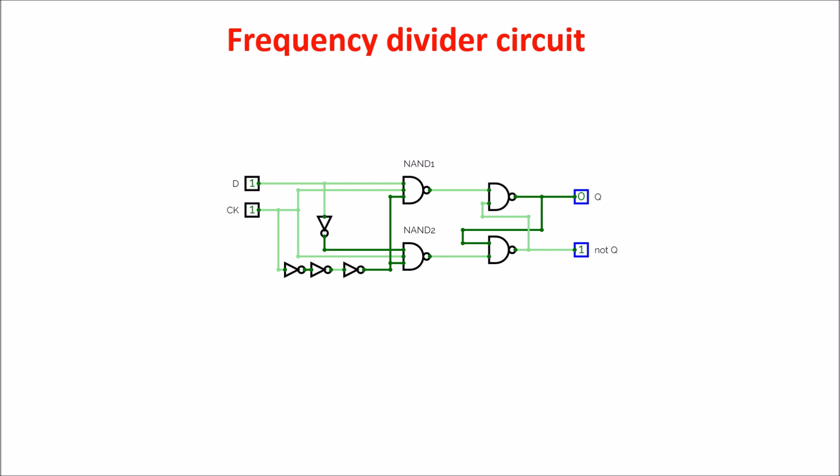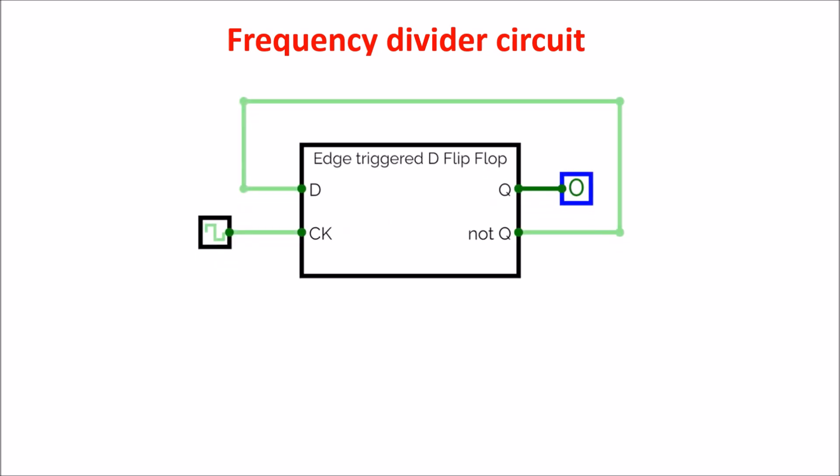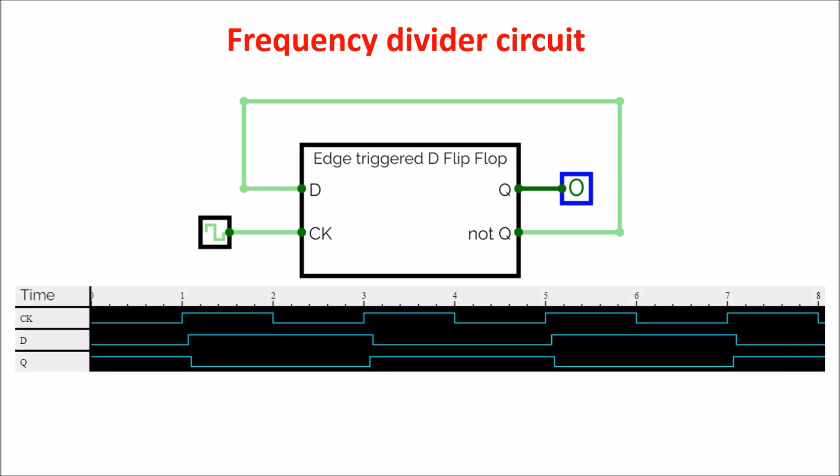So now we put in a box our rising edge D flip-flop and connect the NOT Q output with the D input. Here is the time simulation where we see the clock, the input and Q output. We see that on the rising edge of the clock, Q takes the input D which is 0, but immediately afterwards NOT Q turns the input to 1. But Q doesn't change, keeping 0 till the next rising edge where D is still at 1, so Q turns to 1. You can see Q switches between 0 and 1 at half the frequency of the clock.